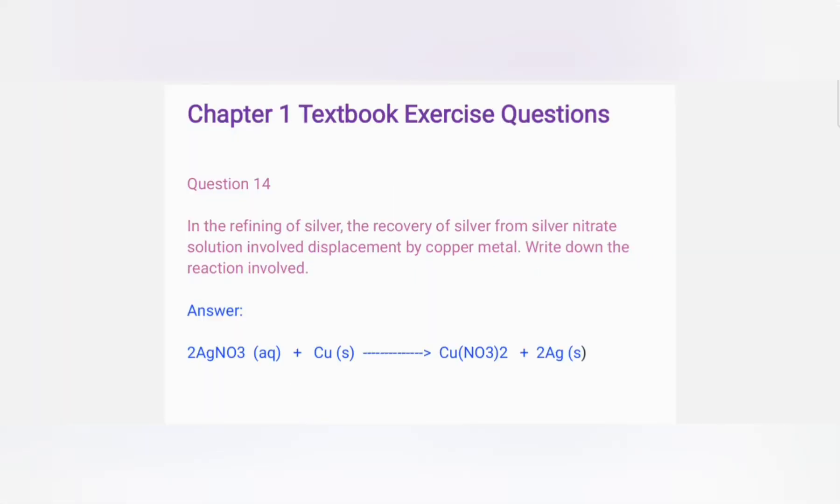Let's see question 14. In the refining of silver, the recovery of silver from silver nitrate solution involved displacement by copper metal. So what is refining in silver? The recovery of silver is from silver nitrate, AgNO3, which you can see. It involved displacement of copper metal. Write down the reaction involved.